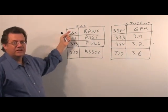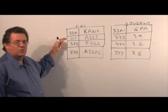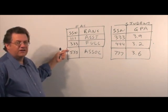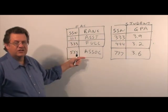And we see in the faculty table, we have social security number and the rank of the faculty member. And so, we have social security number 111, 333, and 555, and respective ranks assistant, full, and associate.